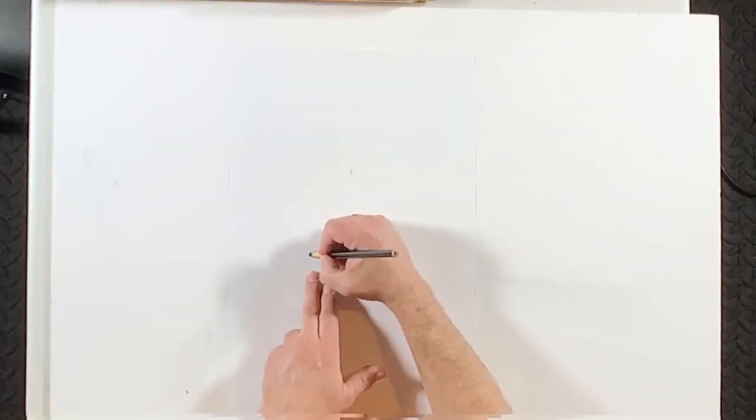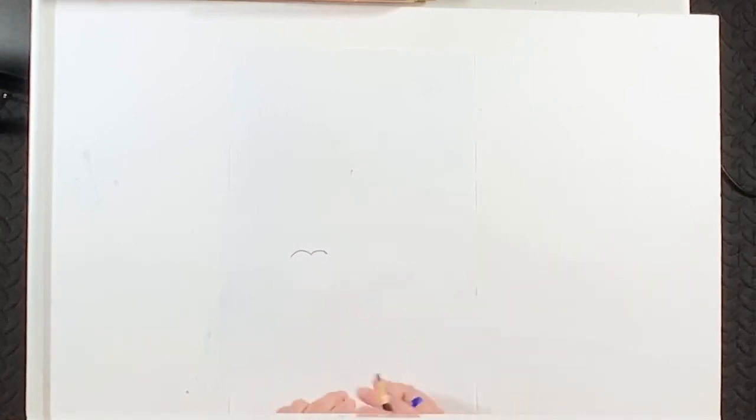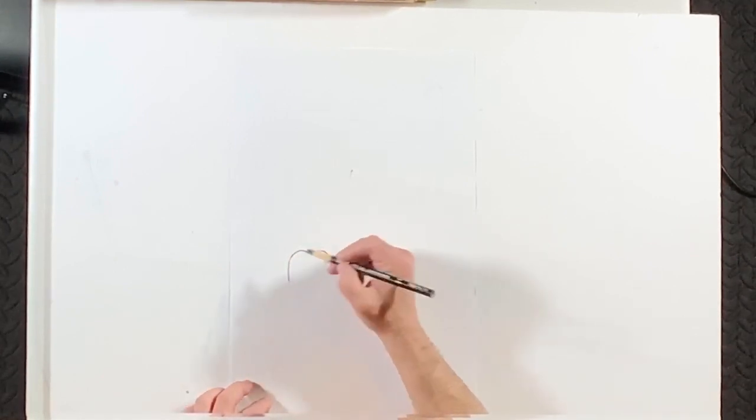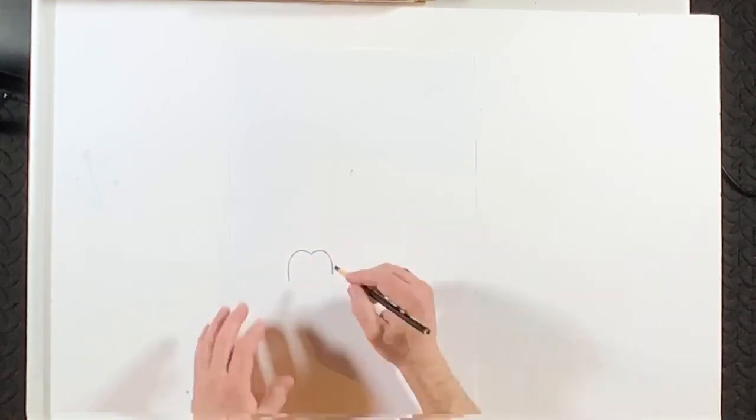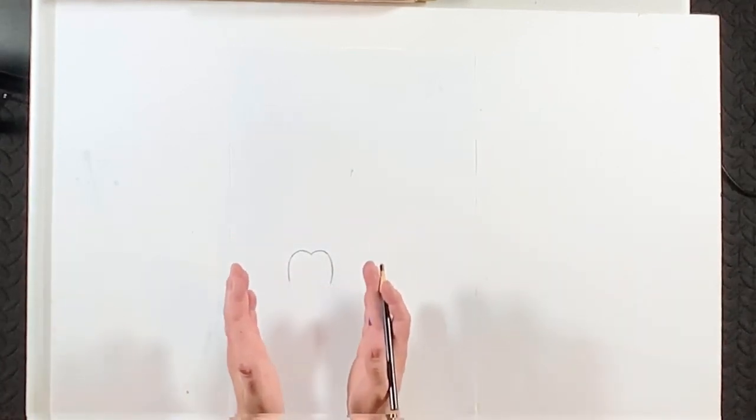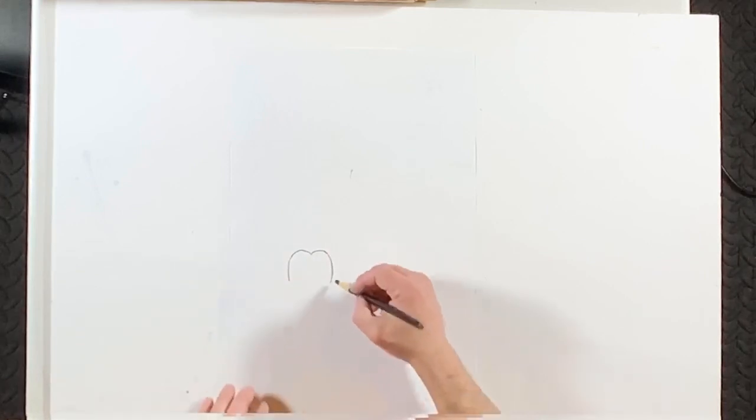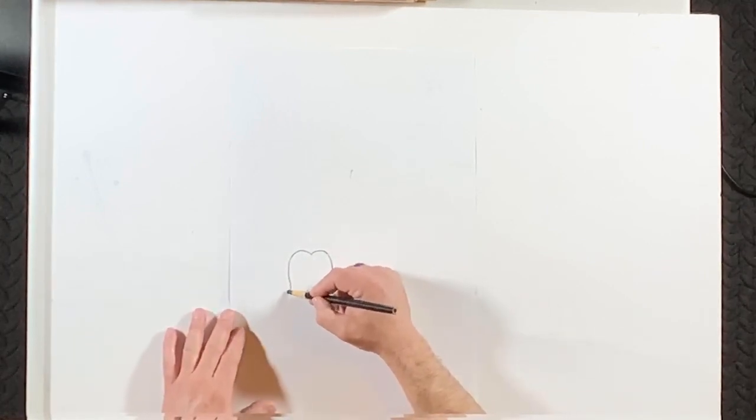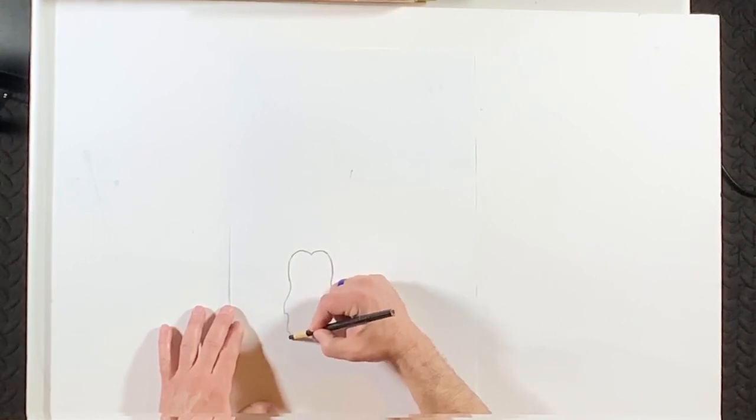And we start just like we're making a heart. How perfect is that? Because our hearts are what we are drawing with today. And so it looks like we're drawing a heart. And then all of a sudden, instead of going down into a point, we're going to put Santa's beard on there. What a combination, right? But it kind of works.